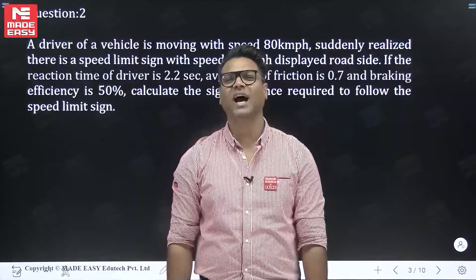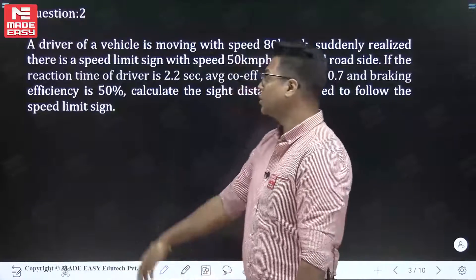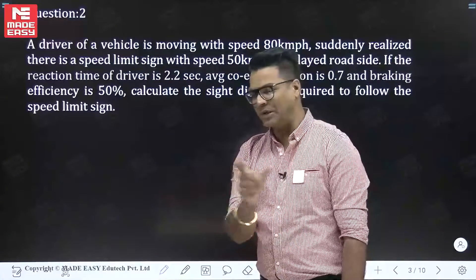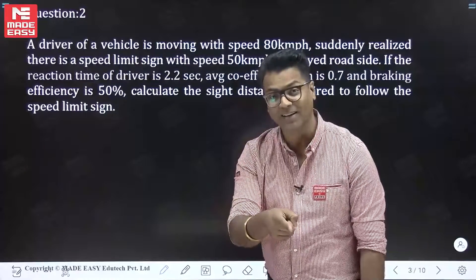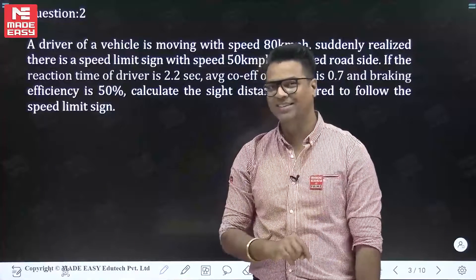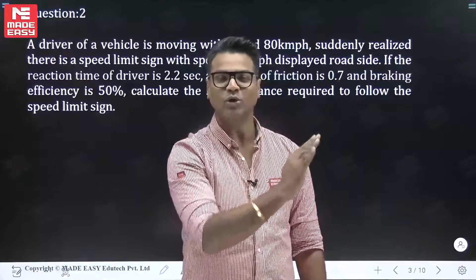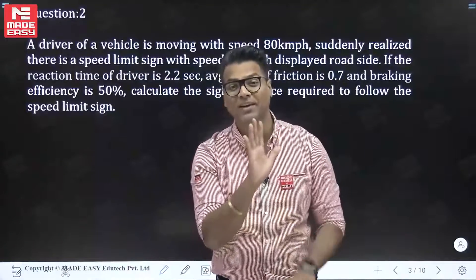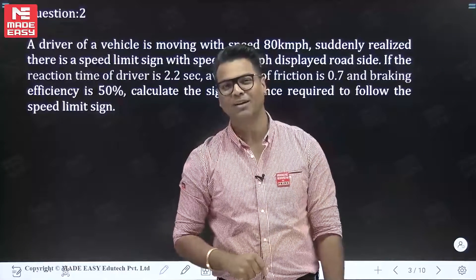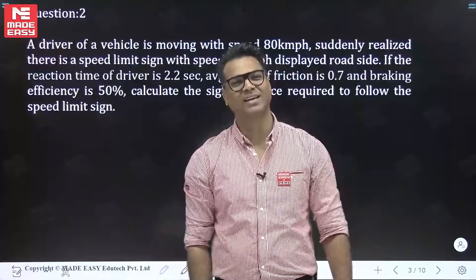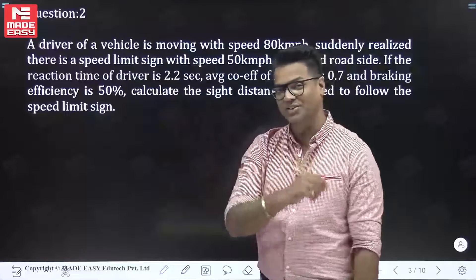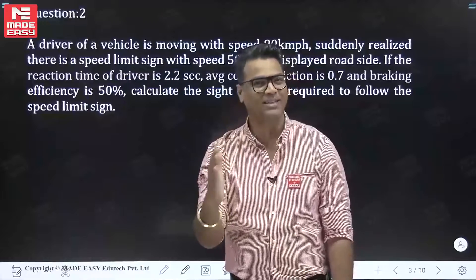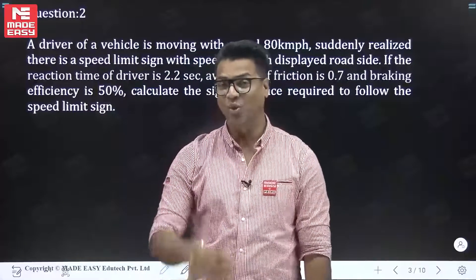The initial speed is 80 km/h. During the reaction time of 2.2 seconds, the vehicle travels some distance, and after that the driver applies the brake — but only to reduce speed from 80 to 50 km/h to follow the traffic speed sign board. So the total sight distance equals the lag distance traveled during 2.2 seconds reaction time, plus the braking distance over which the vehicle reduces from 80 to 50 km/h.